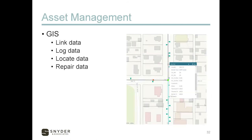Asset management is very similar to data management but takes it a step further. This includes not just the data for the assets, but knowing where those assets are at, details about them, and the ability to view and review that information whenever and wherever. The backbone of an effective asset management program is a GIS system.